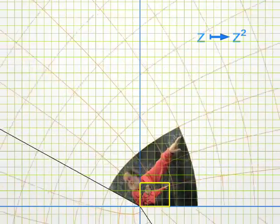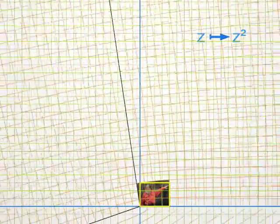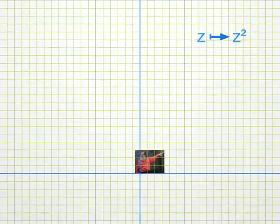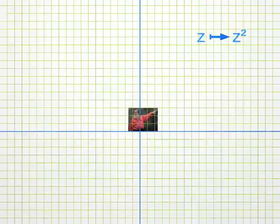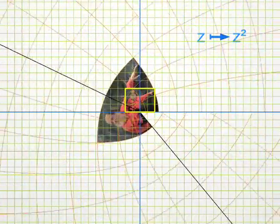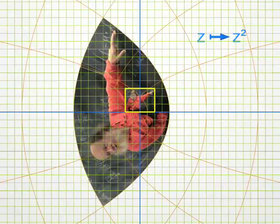Let me place the photo somewhere else, and let's look again at the same transformation Z squared. You will notice again the same argument doubling. For instance, look at my index finger. Before the transformation, its argument is about 45 degrees. And after the transformation, it points upward, at 90 degrees. But you can also observe that moduli are squared.